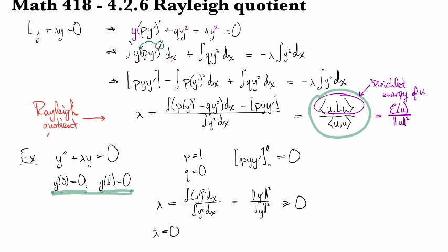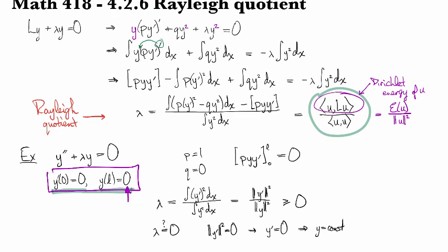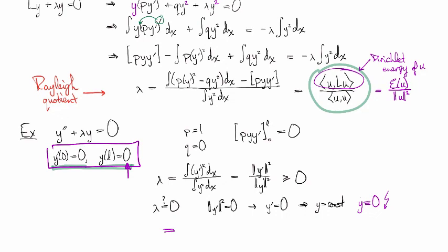Secondly, can it be the case that lambda equals 0? Is this possible? Well, this is only possible if the norm of y prime squared equals 0. But that would imply that y prime equals 0. But that would imply that y is a constant. Can y be a constant? Well, going back to our boundary conditions, it would have to be the constant function 0 based on this boundary condition right here. So, that tells us then that y is identically 0, which would be a contradiction. So, we know now that lambda, the spectrum has to be strictly positive.